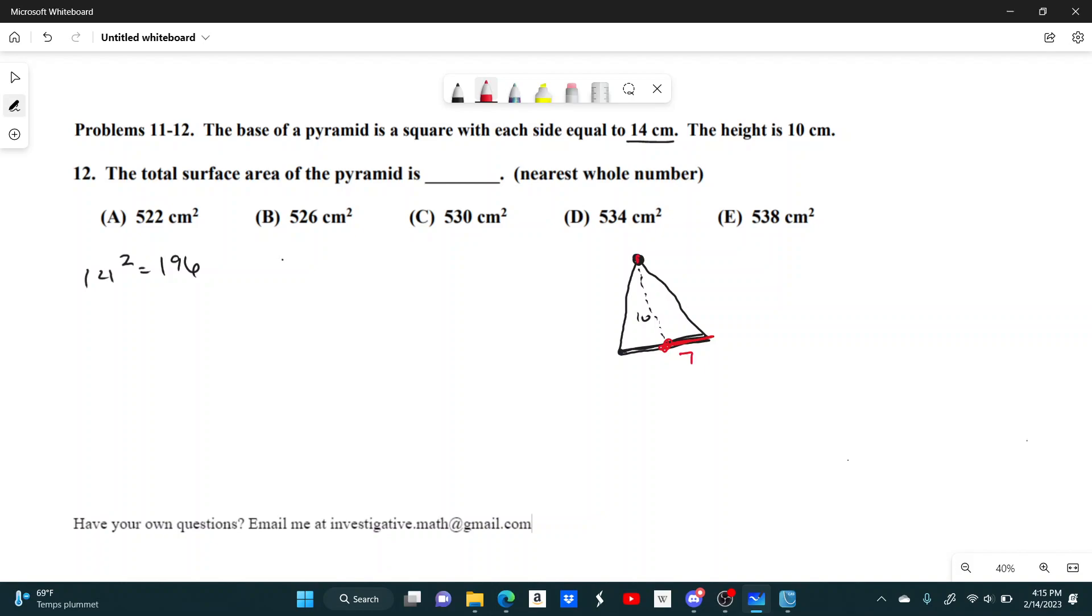And then we can use the Pythagorean theorem to find this side, which will just be the square root of 10 squared plus 7 squared, which is the square root of 149.